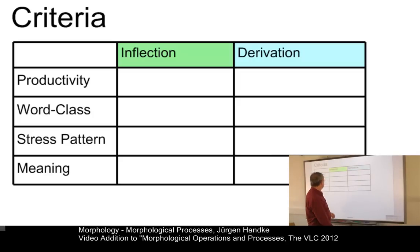Now, the first of these criteria is productivity. Productivity means or wants to answer the question whether a process applies to all members of a given class or only to some of them. Inflection is fully productive since all members of a specific class, let's say all verbs, can undergo a certain inflectional process.